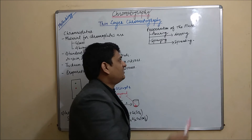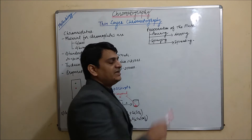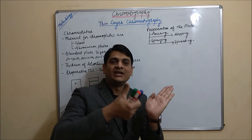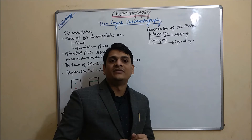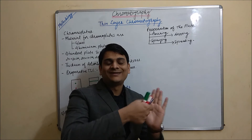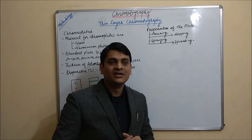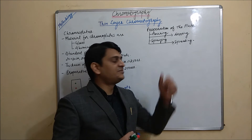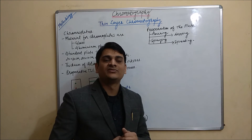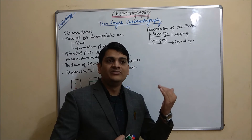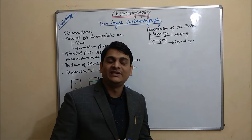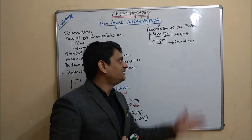Now coming to the next method, which is spraying. In the spraying method, a sprayer is used and we can spray our stationary phase directly onto the plate. However, the spraying method is commercially not useful because uniformity is very less in this method.